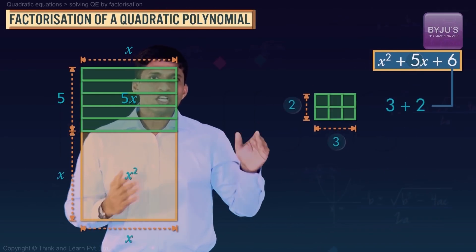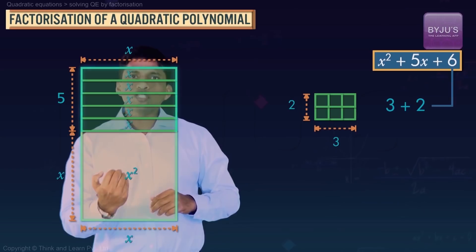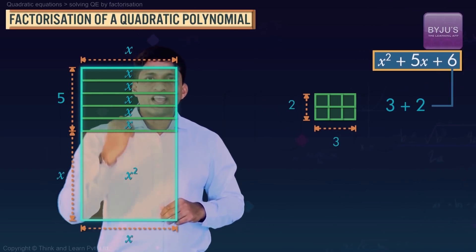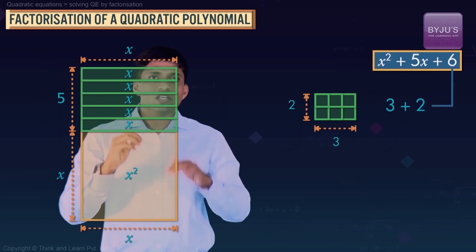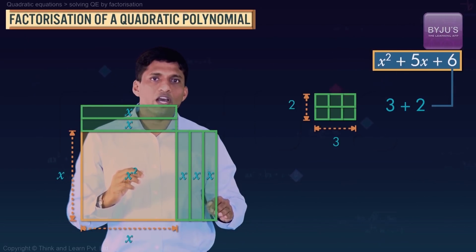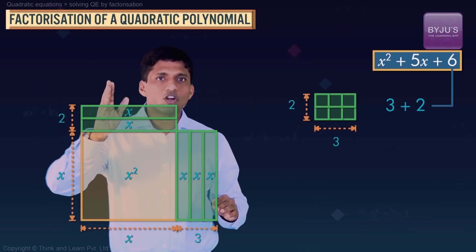Now coming back to this area x² + 5x, this 5x you can split as 3x and 2x. So I will bring this 3x down here. 2x is left on top.